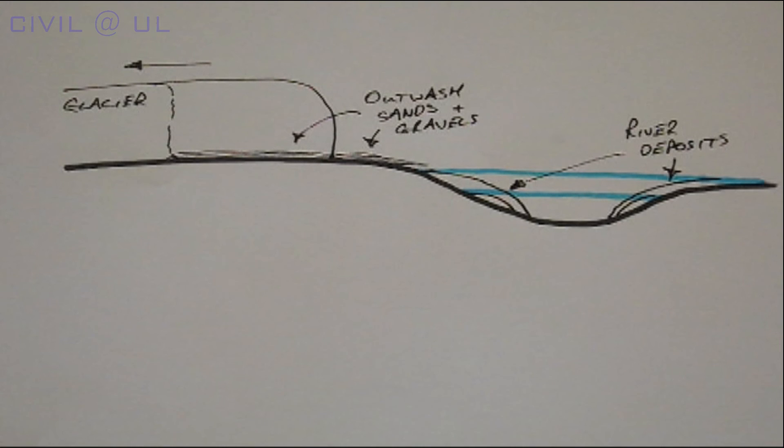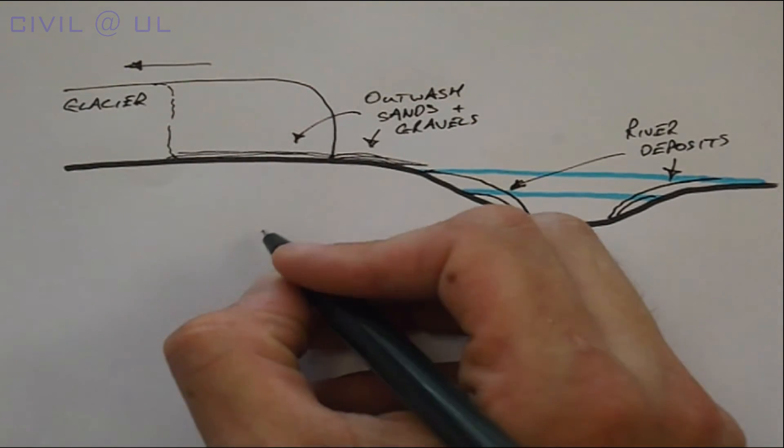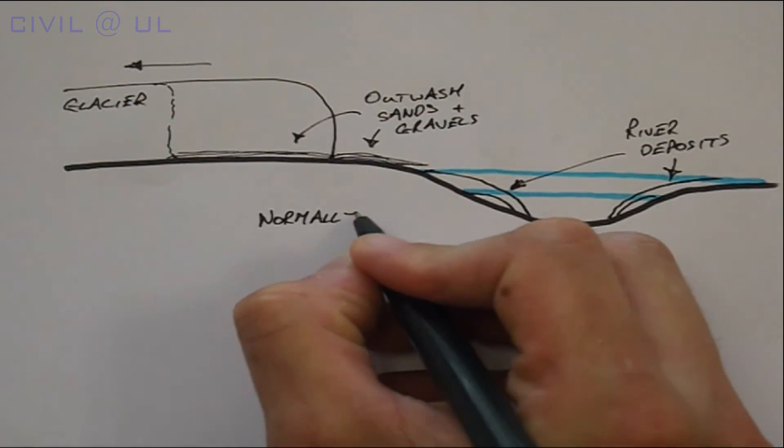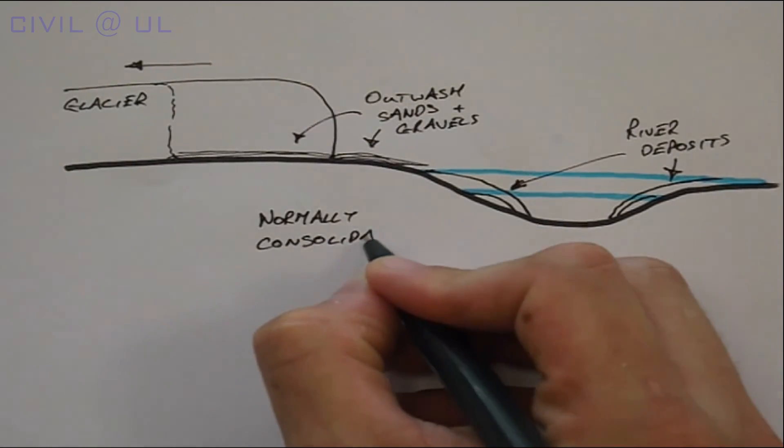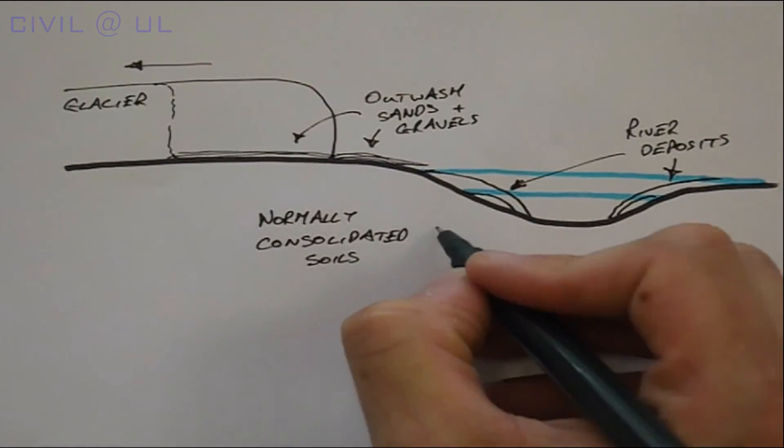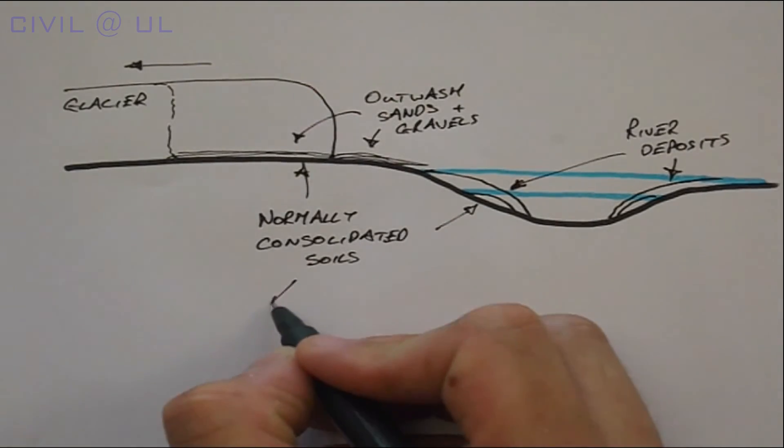A soil that has not been compressed but instead is soft and weak. These types of soils we refer to as normally consolidated soils. We have to pay particular attention when we construct buildings on these soils.